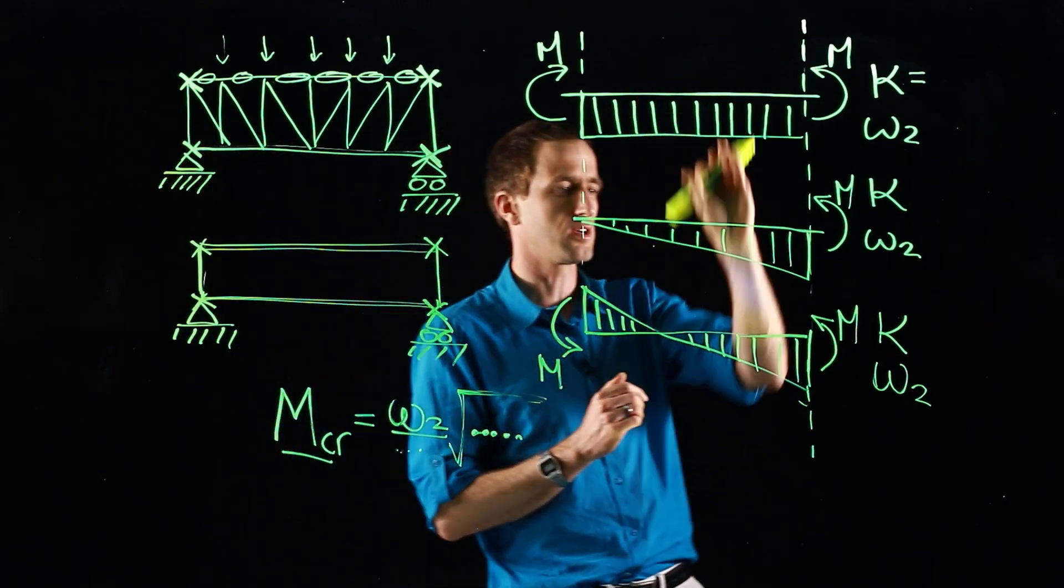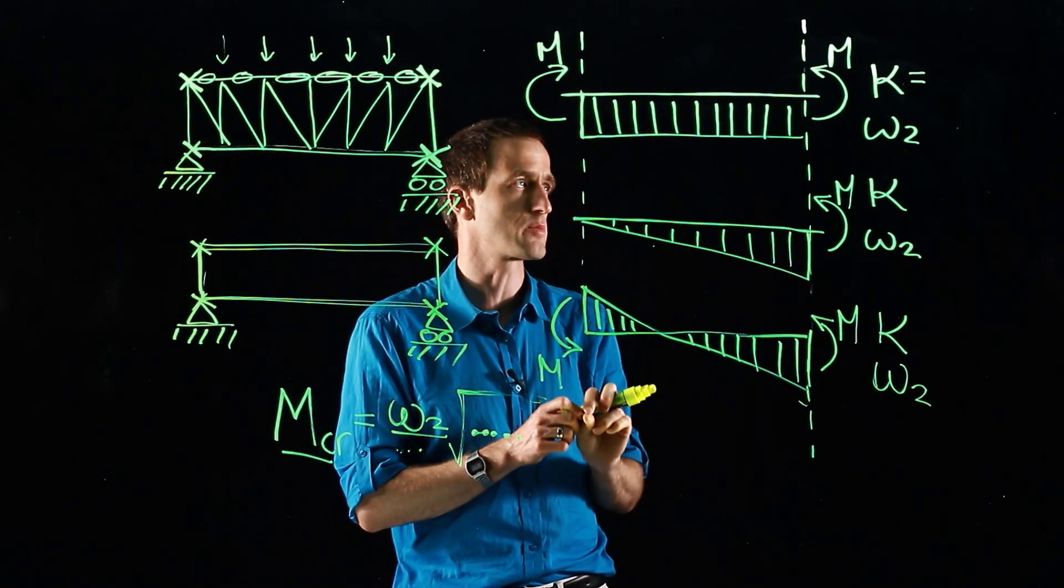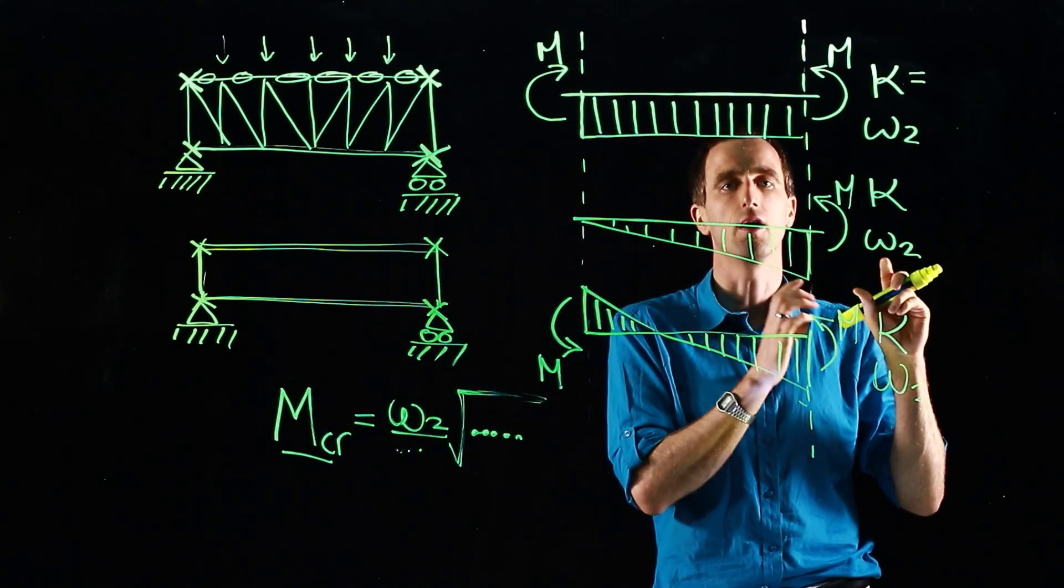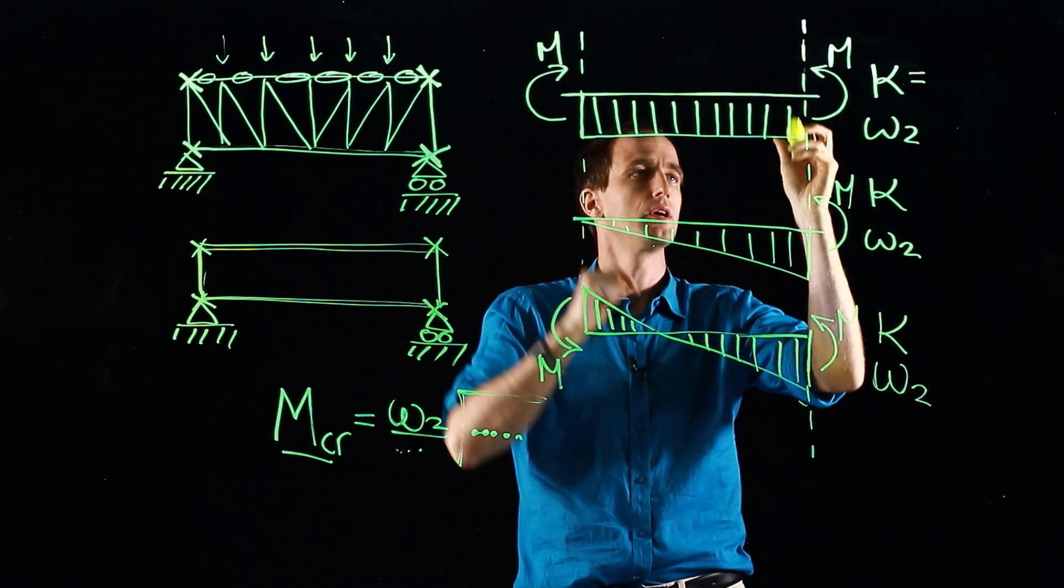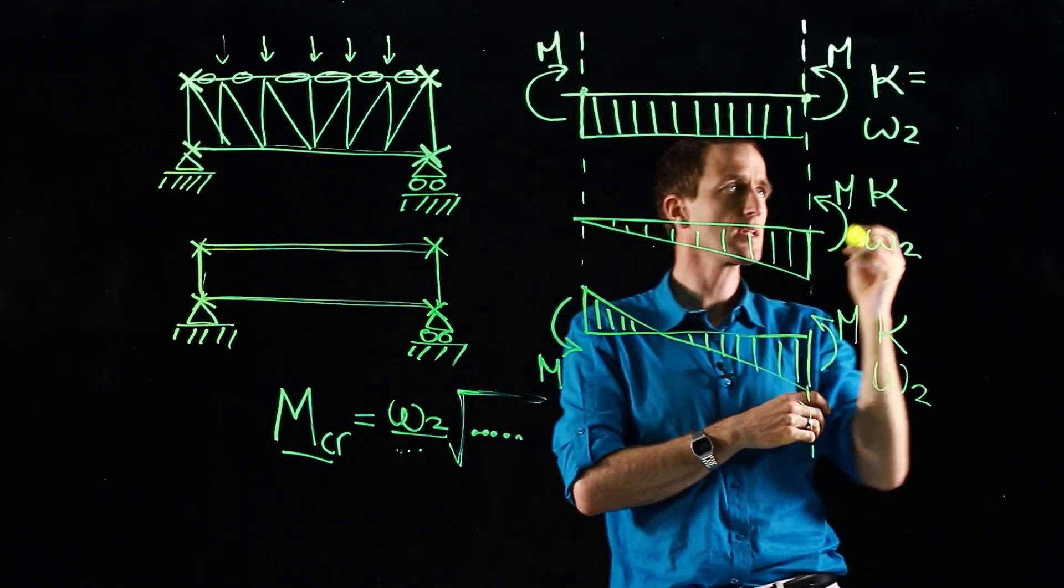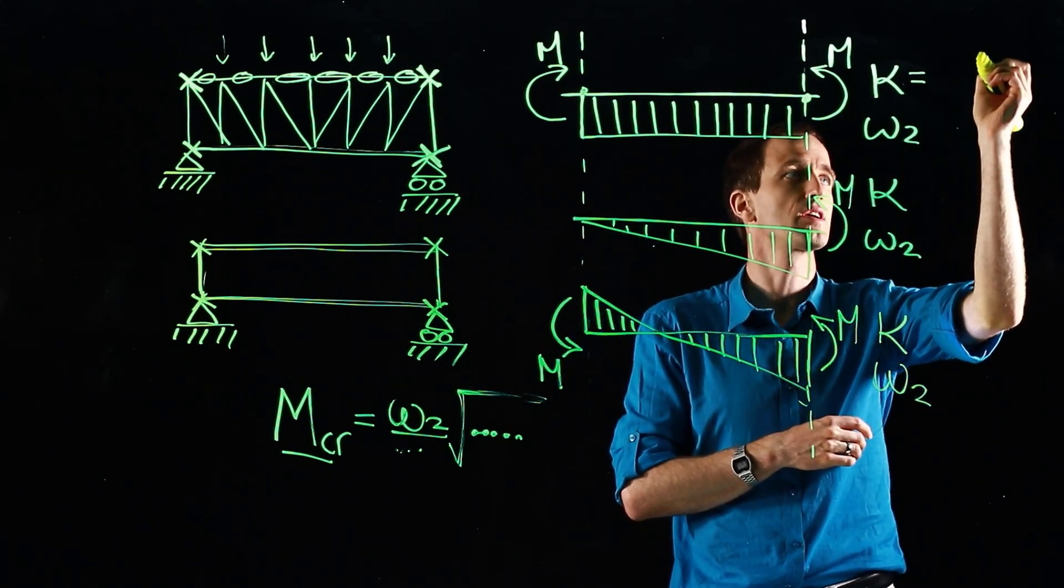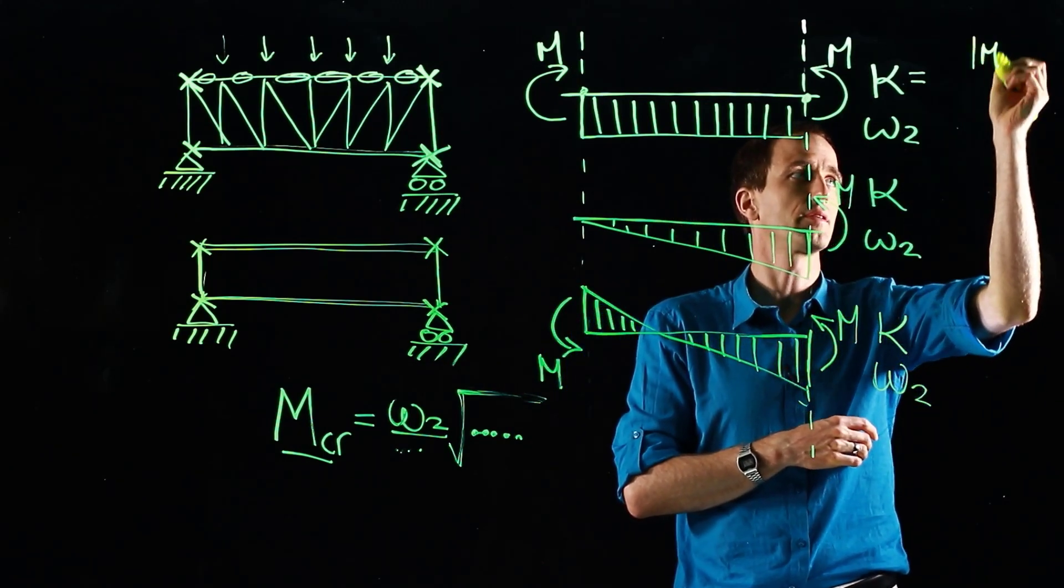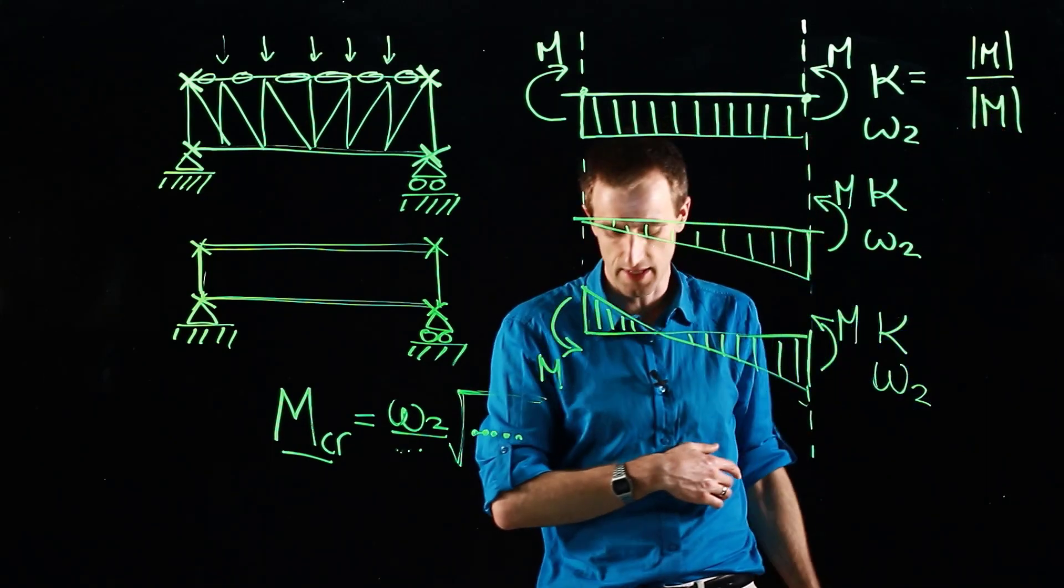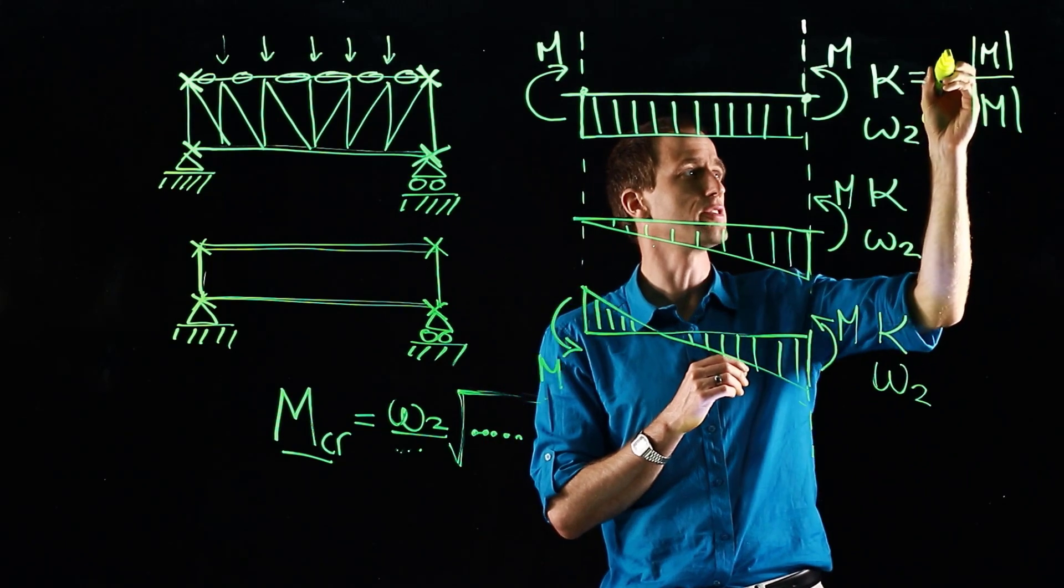So if we have these three bending moment diagrams we're going to calculate the different values. Well firstly kappa, remember, is the ratio of our moments at the ends. So the ratio of the moment there to the ratio of the moment there. And so in this case it will be the value of the one moment over the other.